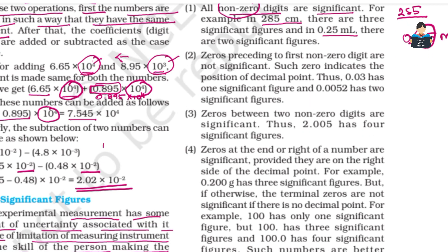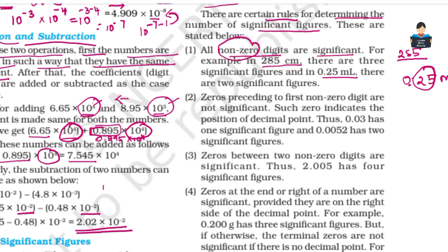Rule 2: The zeros preceding the first non-zero digits are not significant. Such zeros indicate the position of the decimal point. Thus, 0.03 has one significant figure, and 0.0052 has 2 significant figures.